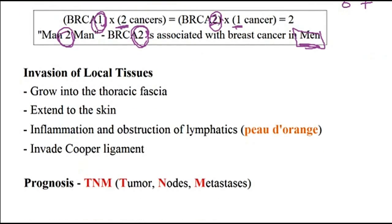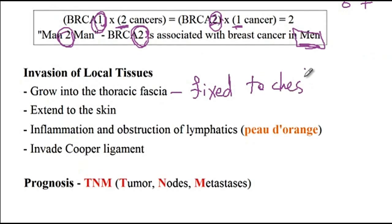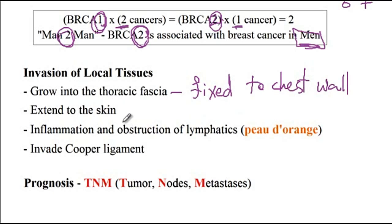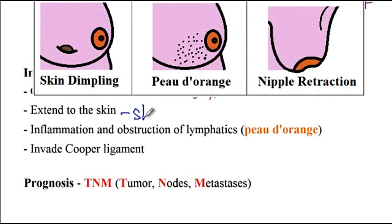Breast cancers can invade local tissues — they could grow into the thoracic fascia and become fixed to the chest wall. If a patient raises the muscles of the chest wall and the breast moves with it, that's a sign of possible growth into the thoracic fascia. It could also extend to the skin and cause skin dimpling.